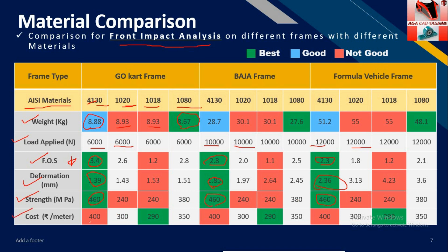Now, cost — I have found these rates with my sources. The cost for AISI 4130 is high, as it has high strength, so that is obvious. Better the results, higher the cost will be. If you want to check the results, you can take a screenshot of this table and study them.